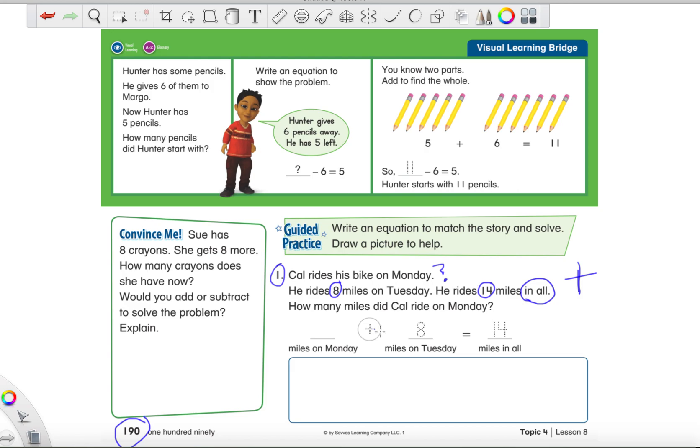How many miles did Cal ride on Monday? We don't know how many miles he rode on Monday. It's a big question mark. We know Tuesday he rode 8, and we know in all is 14. So in your book, this is how they set it up. I would have done it the other way, but it's okay. We have a plus sign in the middle. For where it says Tuesday, we have the number 8. And then we know that our total is 14.